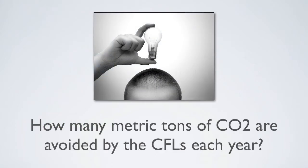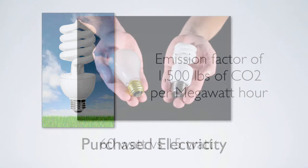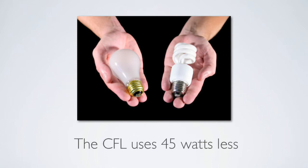In this scenario, how many metric tons of CO2 are avoided by the CFLs each year? Here, we are trying to calculate the reduction in greenhouse gas emissions resulting from the lighting improvements. We know the emission factor is 1,500 pounds per megawatt hour, so we need to determine how much less electricity the new lights will consume over the course of one year. In order to calculate this, we first need to look at the difference in electricity consumption. The incandescent bulbs consume 60 watts each, whereas the compact fluorescents consume 15 watts each. So, the fluorescent bulbs consume 45 watts less. It is this differential we will be focusing on.